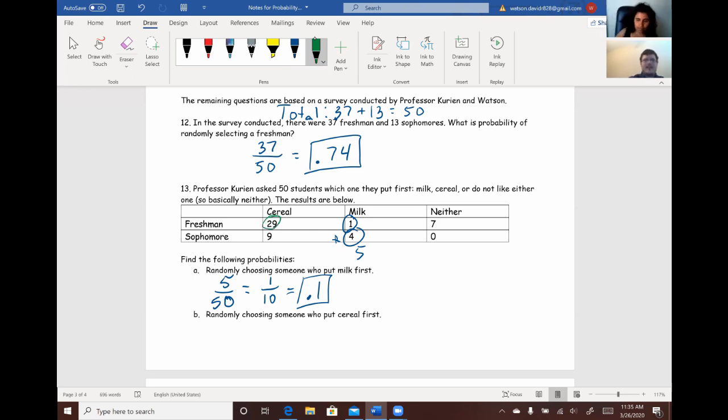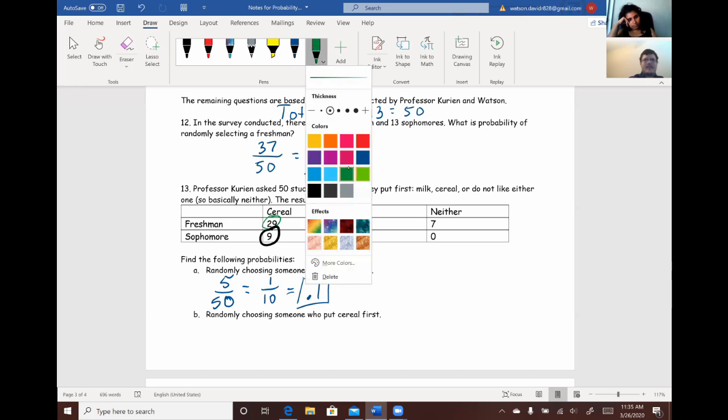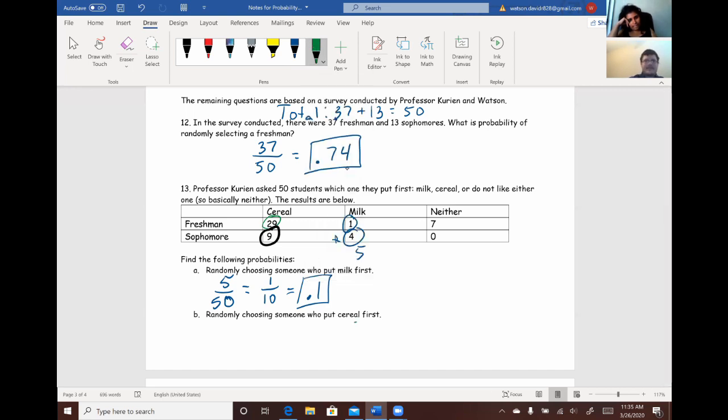So, there's 29 freshmen who put cereal first and 9 sophomores who put cereal first. So, we just add those numbers up. And then when we add those up, we're going to get 38. So, we have 38 over, still a total of 50. And if we simplify that first, then you can divide both of these by 2, getting 19 over 25, which is 0.76. And that would be our answer.